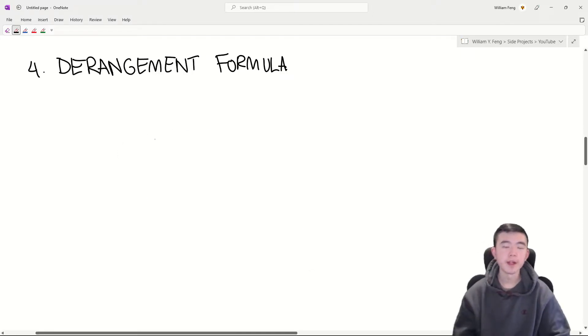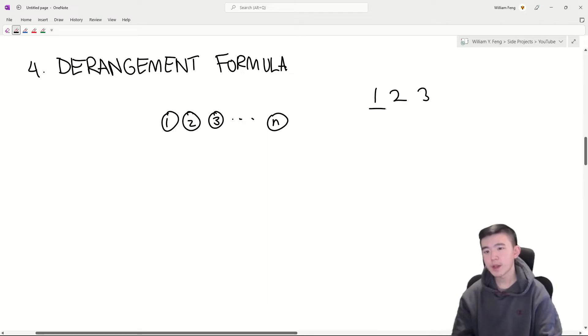Next up is the derangement formula. It tells us the number of ways to derange n objects. What this means is that if we have n objects, we want to find the number of ways to shuffle them around such that none of them end up in their original location. For instance, in the example 1, 2, 3, a derangement could be 3, 1, 2.